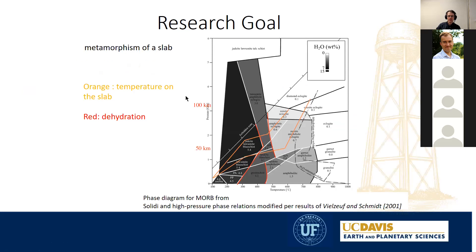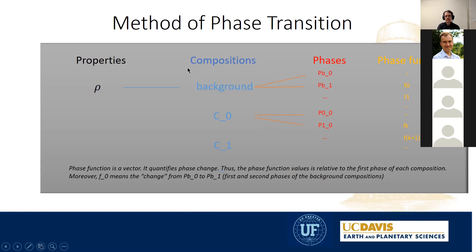We incorporate a phase diagram of the crust and tune it specifically for the subduction zone. As you can see here, the lines represent the temperature for the subduction zone surface. This is a classic phase diagram — I think from Hector 2003. What we ended up doing is adding another layer into the ordering we previously had in ASPECT.